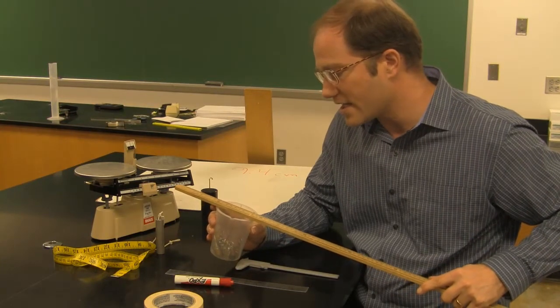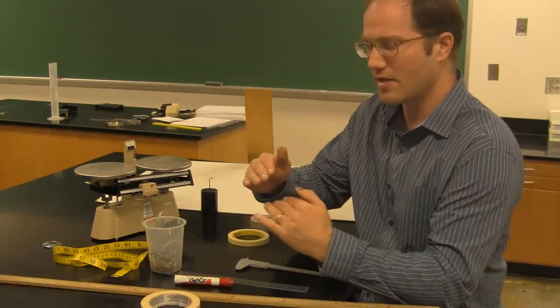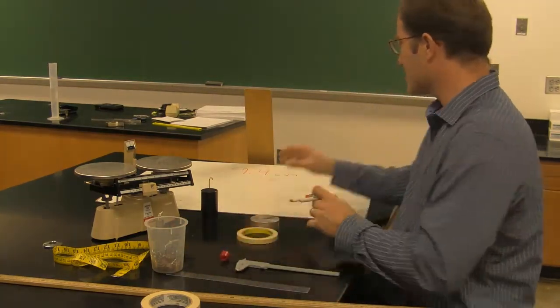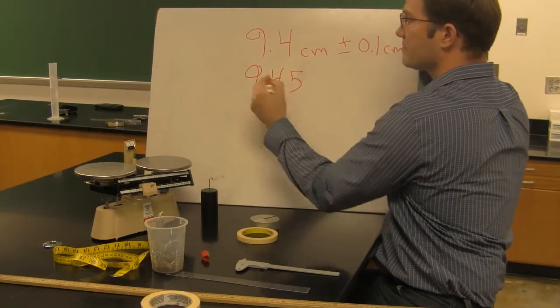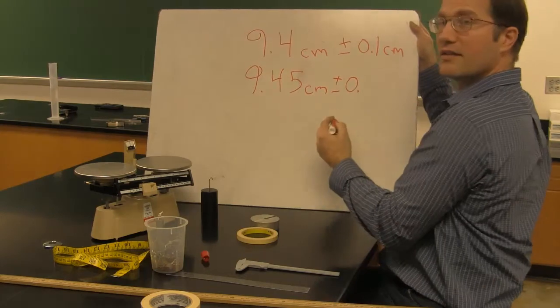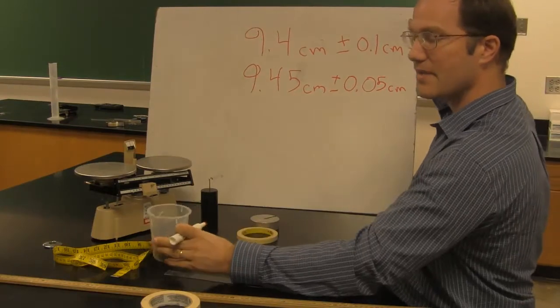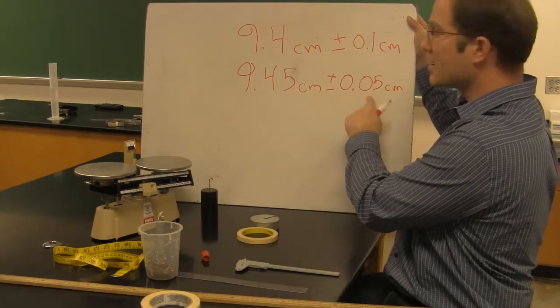I'll make that same measurement. It still looks like 9.4 centimeters, but maybe I can estimate to in between the smallest demarcations, maybe to the nearest one half of a millimeter. It looked like it was close to the halfway mark between 9.4 centimeters and 9.5 centimeters. I would say that's equal to 9.45 centimeters plus or minus 0.05 centimeters. Now that I'm estimating, my uncertainty has got a little smaller.